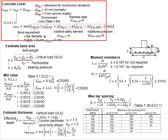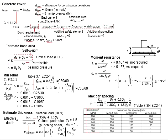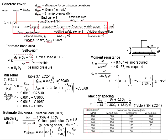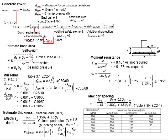First, we look at the concrete cover. The nominal cover for the pad foundations is given by these equations, which constitute the minimum cover and also allowance for the construction deviations. For the Delta-C deviations, 10 mm is normally used. The minimum cover is determined by the bond requirement, governed by the size of the reinforcement bar. If the aggregate size is more than 32 mm, the minimum cover for the bond requirement needs to be plus 5 mm.